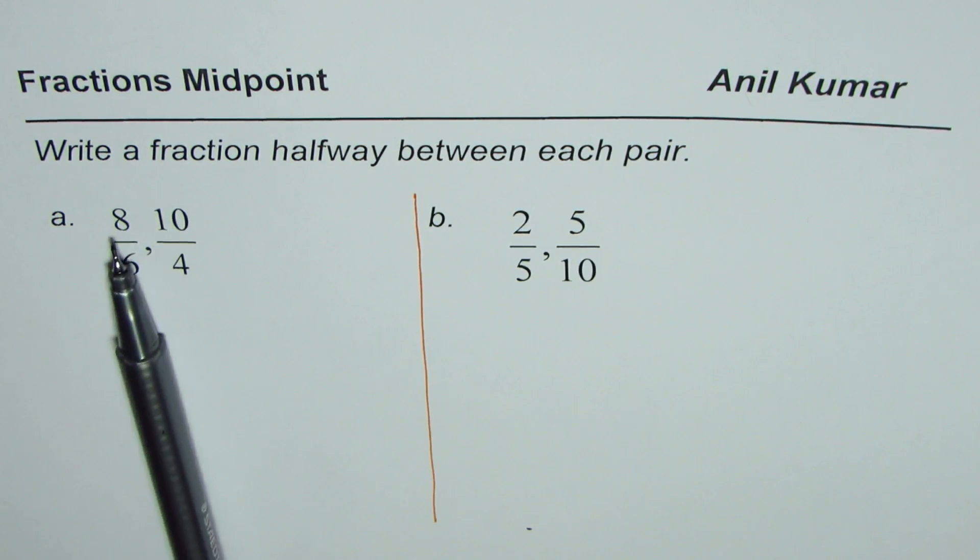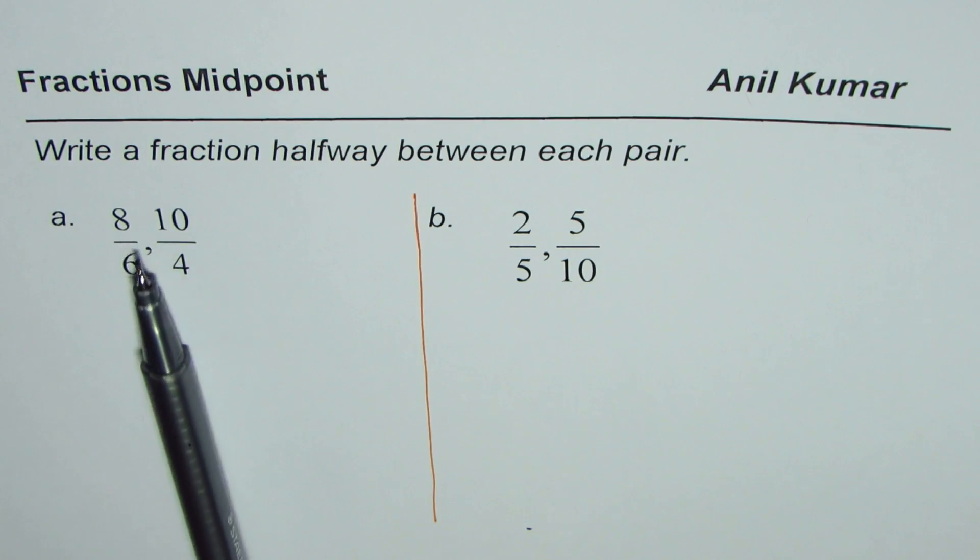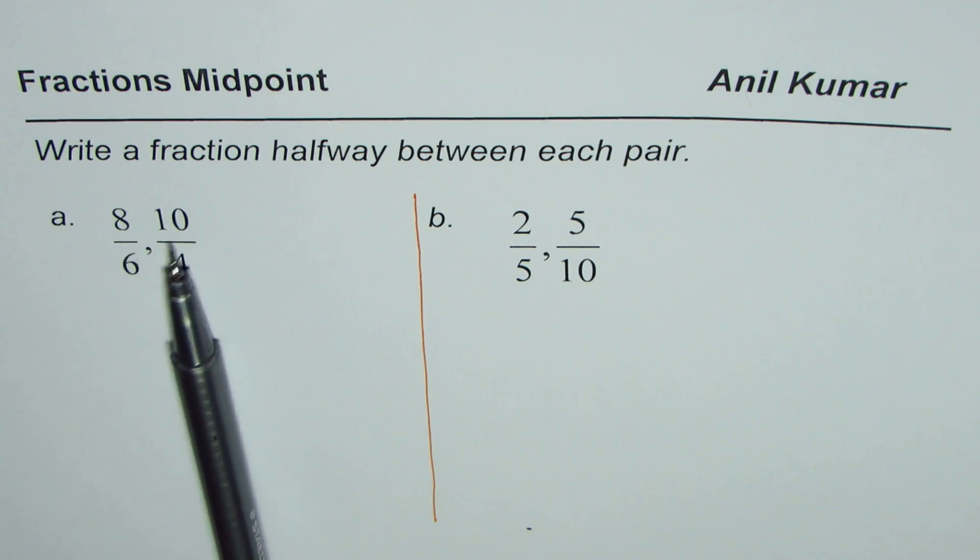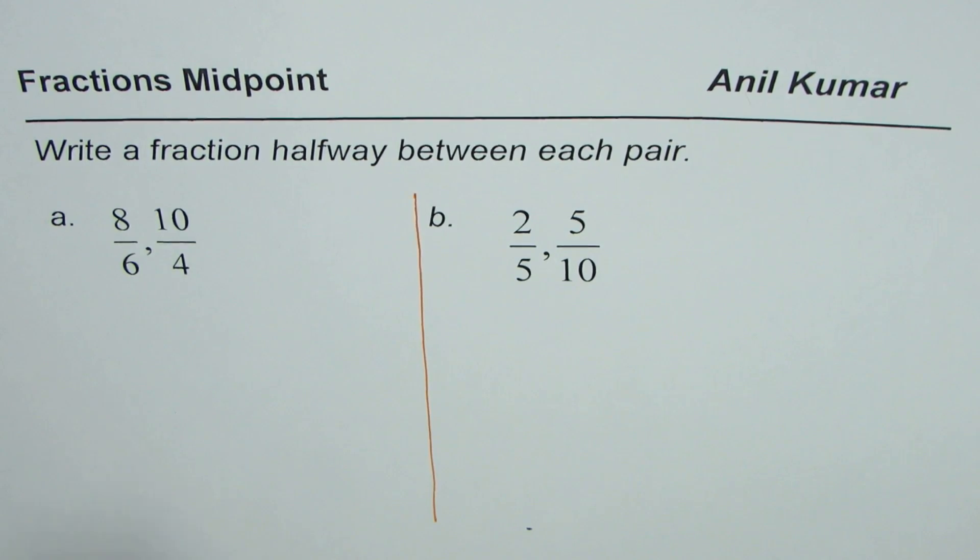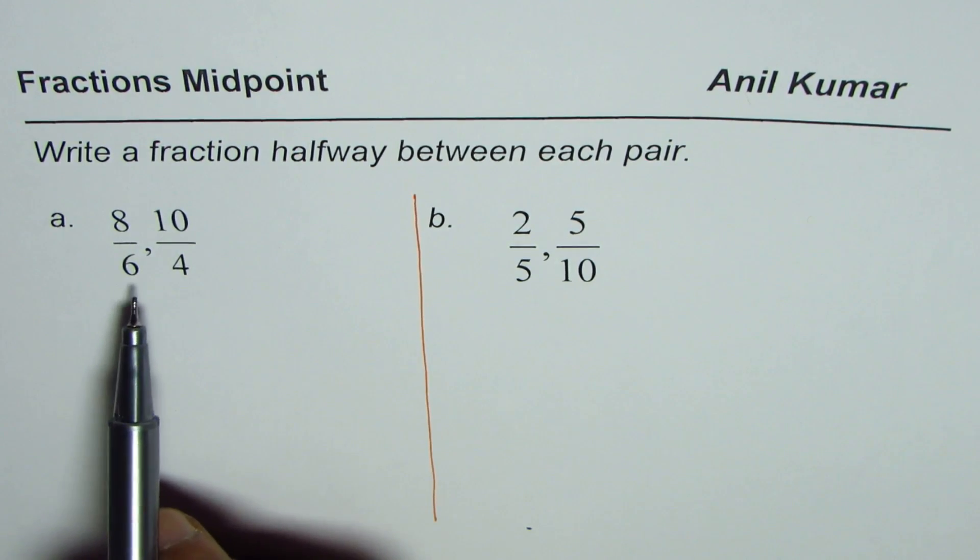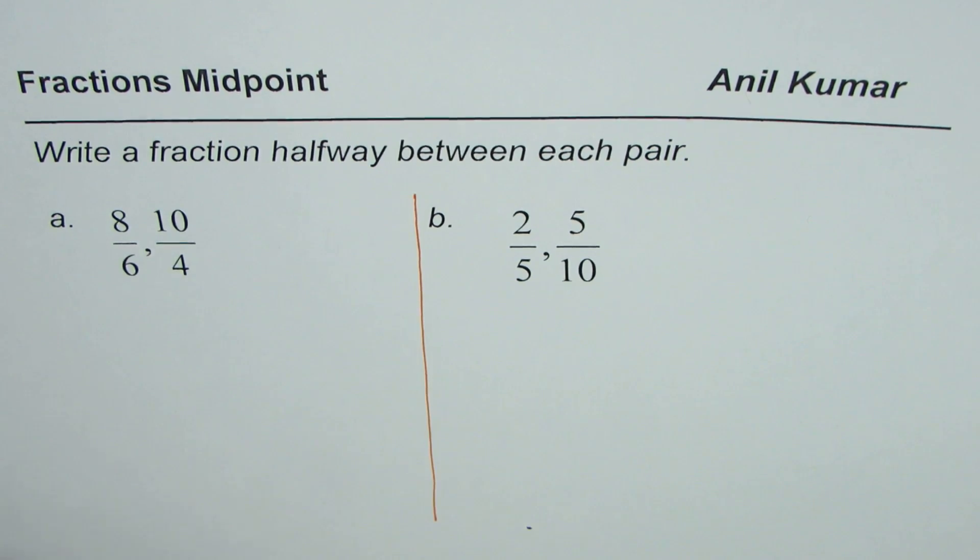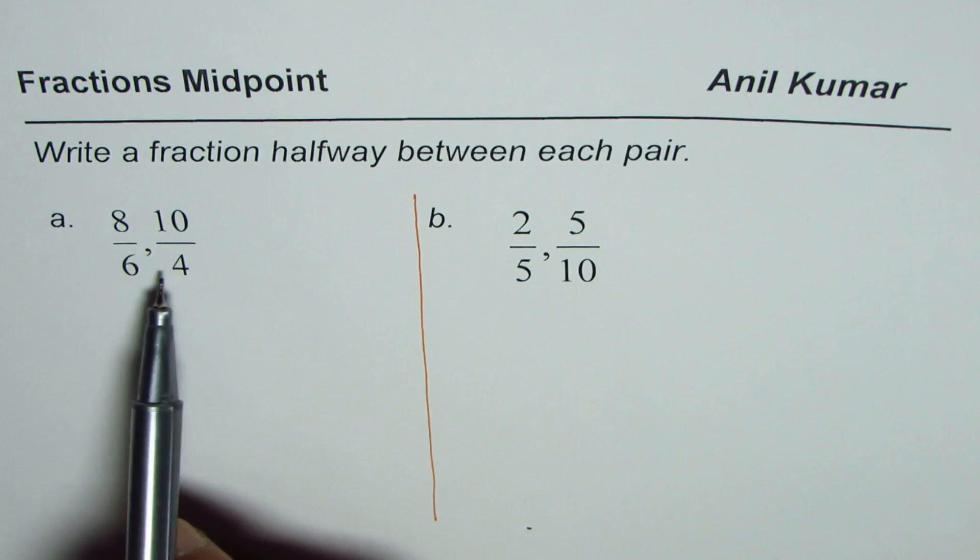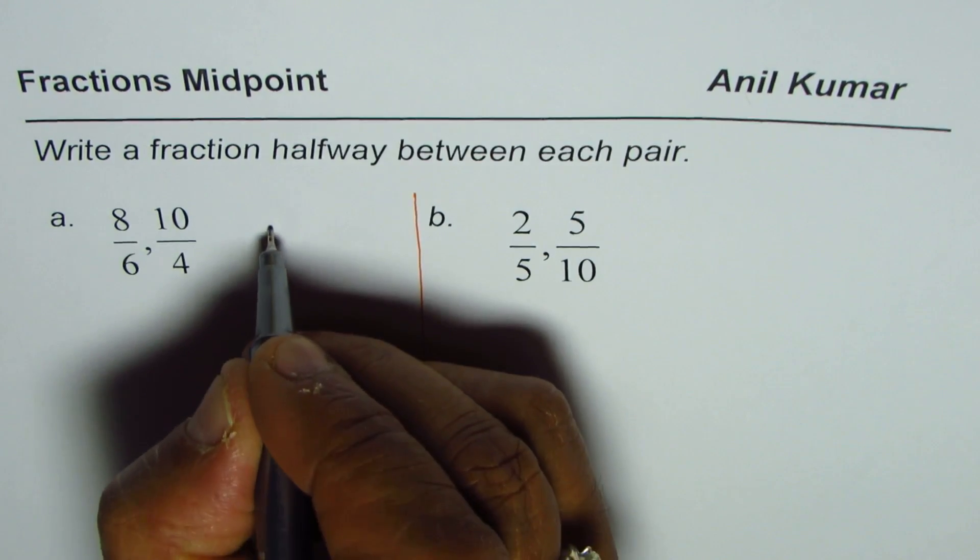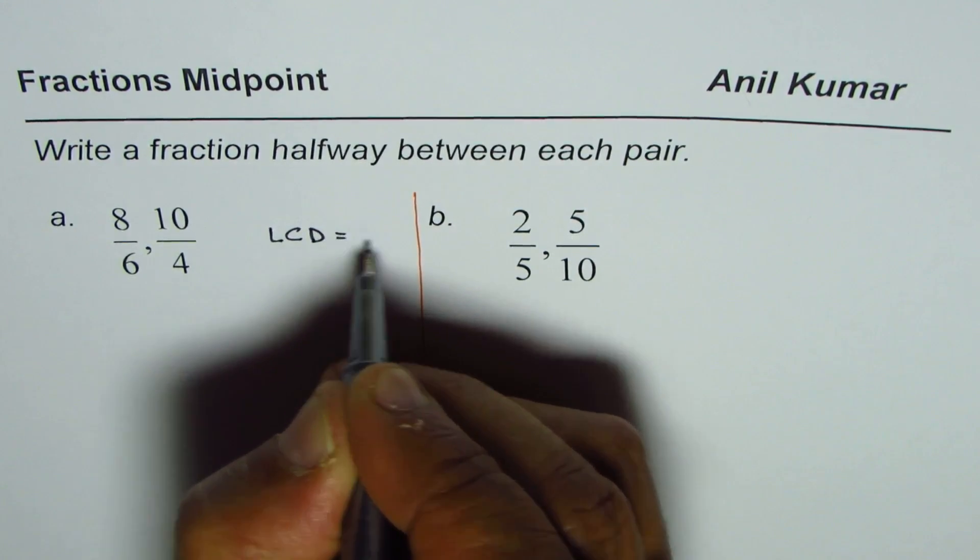So the first one is we are given two fractions 8 over 6 and 10 over 4. We need to find a fraction halfway between these two. How are you going to do it? Well, whenever we have fractions it is important to have same denominator. The common denominator is 12. So the lowest common denominator is equal to 12.